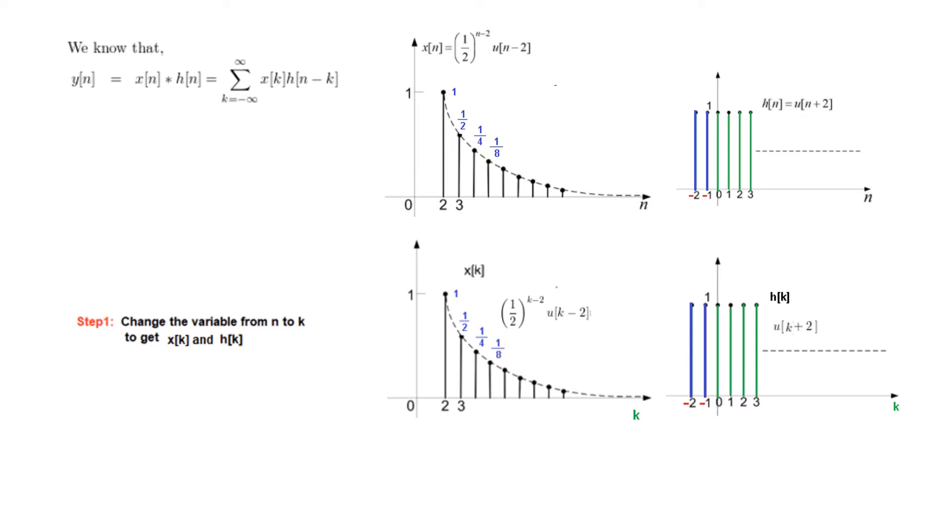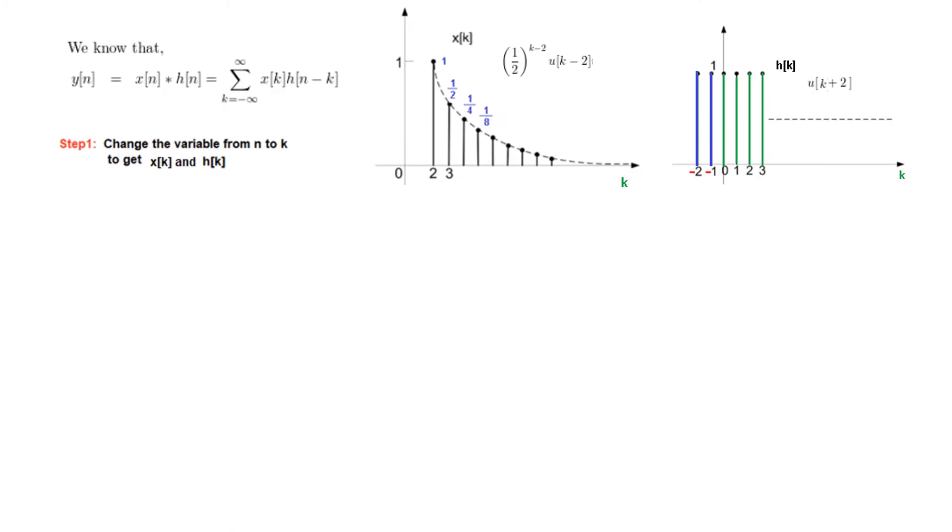And the values will also change. Now you see, half to the power (n-2) will now become half to the power (k-2) and u[k-2] instead of u[n-2]. And similarly here. So that is the first step. Okay, so we have changed the variable to k variable.